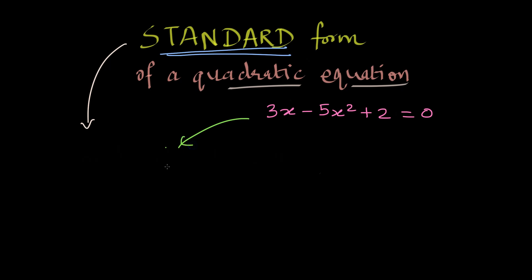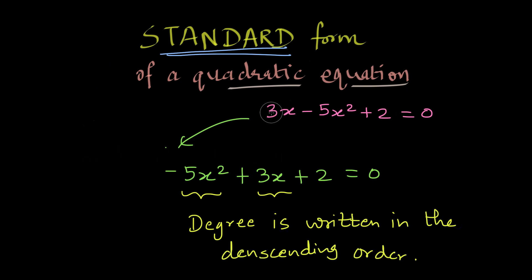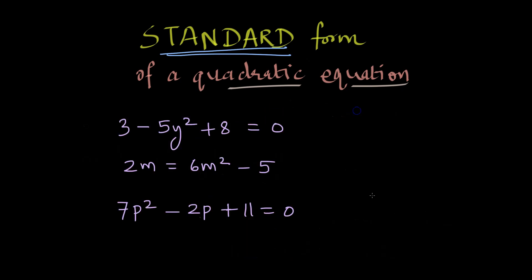The standard form of the quadratic equation could be written like this. If I had to write the same equation now, I would write -5x² first, then +3x + 2 = 0. What do you notice? I have put the term involving the second degree of the variable at the first place, then I have written 3x which involved the first degree of the variable, and then the constant term.